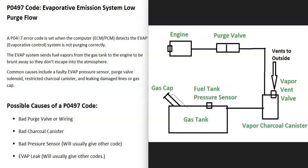Depending on the vehicle — the year, the make — there can be different things going on inside the EVAP system, and the components can be designed differently. So if you are going to work on your system, it's a good idea to get a diagram of what's going on and all the different components involved. The basics: gas vapor leaves the gas tank, goes through a hose, and goes over to what's called a charcoal canister, which is kind of like storage for the gas vapors. Either combined with the charcoal canister or located right next to it is going to be what's called a vent valve.